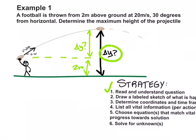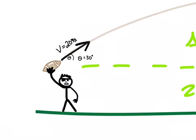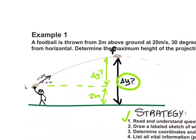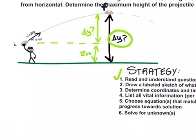Determine coordinates and time frame. Let's zoom back in. This will be our initial spot right there, and this will be our final position right up there at the top. So there's our time frame. And now we're ready to do the next step and list all vital information. Well, this is a vertical question because they're asking for height, so I will write down vertical information.